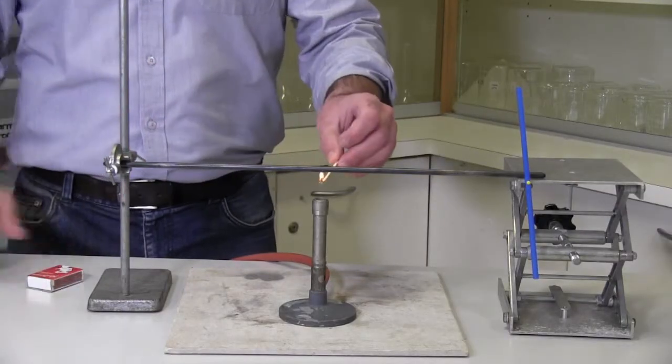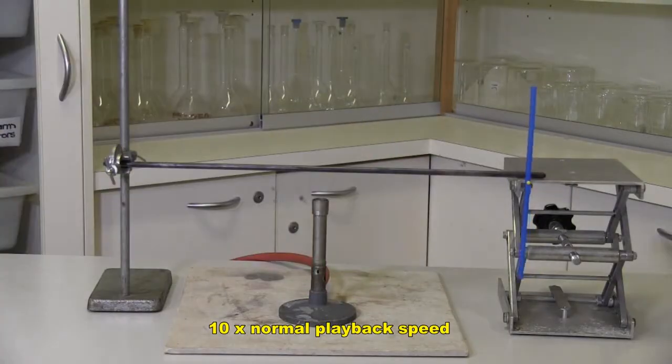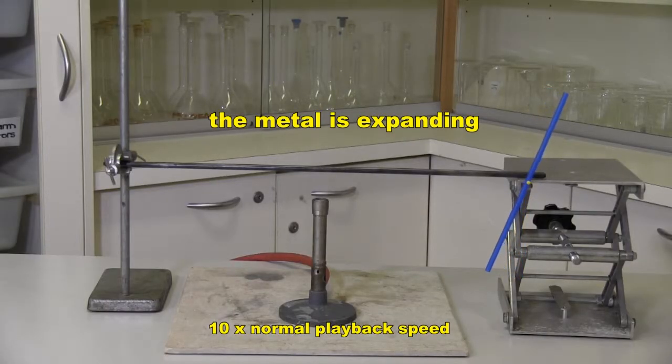As the iron rod heats up, you can see that the straw is rotating, which means that the pin is rolling, which means that the metal is expanding. I can't even tell just by looking at the iron rod that it's expanding, because it's barely expanding at all, but the fact that it is expanding is really important.